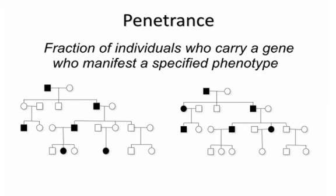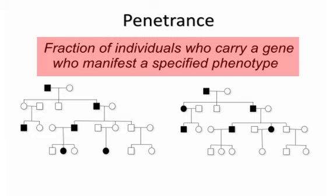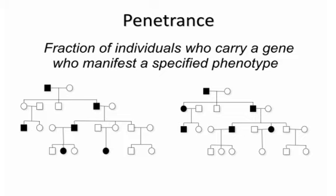An important concept encountered particularly in dominant traits, although it occurs in recessives as well, is that of penetrance — technically defined as the fraction of individuals who carry a particular gene mutation who actually manifest some specified phenotype. You can see instances of non-penetrance in these two families: here's a child whose parent is affected, and whose child in turn is affected, but this intermediate individual is depicted as unaffected. So the mutation presumably passed through this individual but somehow is not manifest — this individual would be said to be non-penetrant.